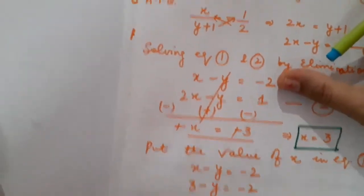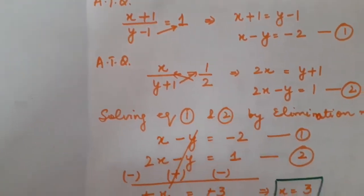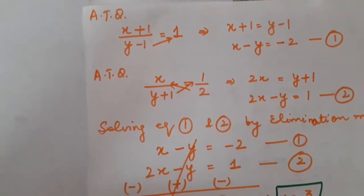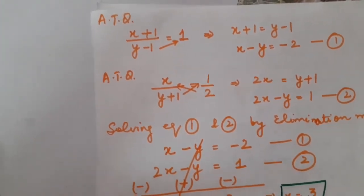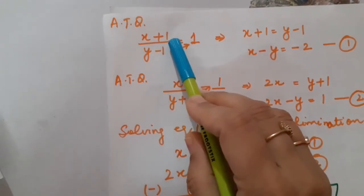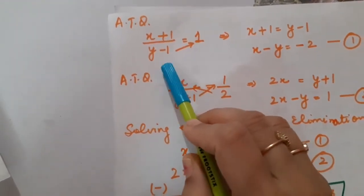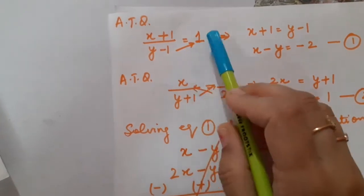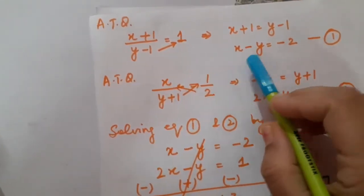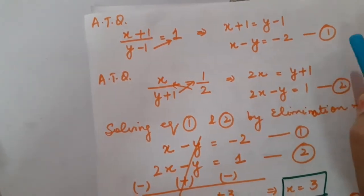According to the question, if 1 is added to the numerator and 1 is subtracted from the denominator, we get the fraction equal to 1. So: (x plus 1) upon (y minus 1) equals 1. After solving, I have got x minus y equals minus 2. This is equation number 1.